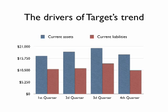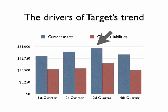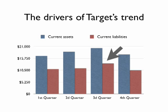A look at the drivers explains the trend. From the first quarter to the second quarter, accounts receivable and inventories increase more than accounts payable, driving the ratio up. In the third quarter, Target builds inventory in advance of the fourth quarter selling season, but uses more accounts payable and short-term debt as financing, pushing the ratio down.